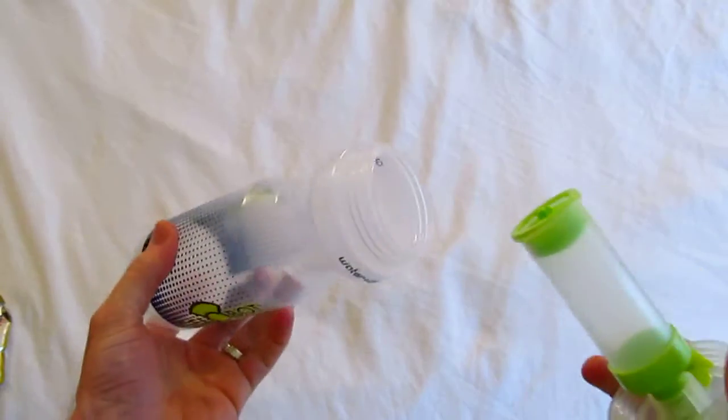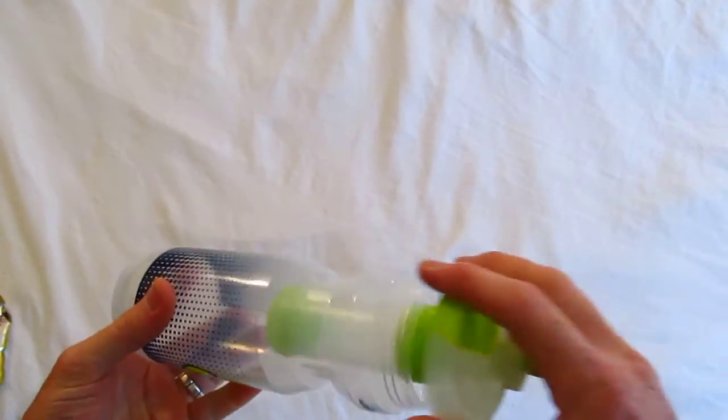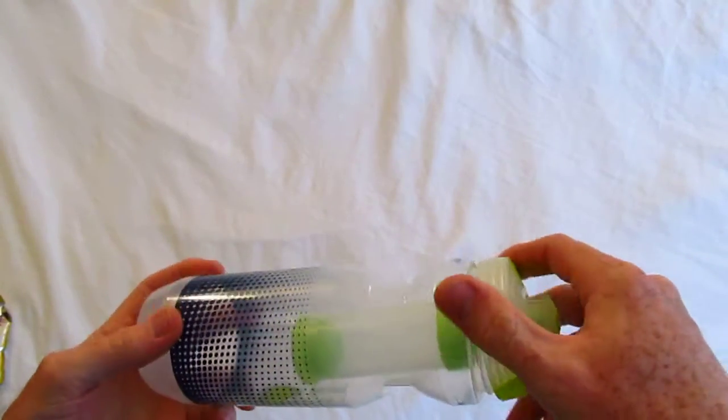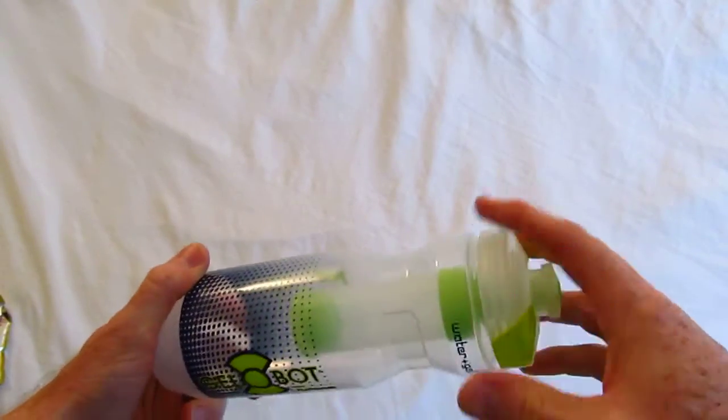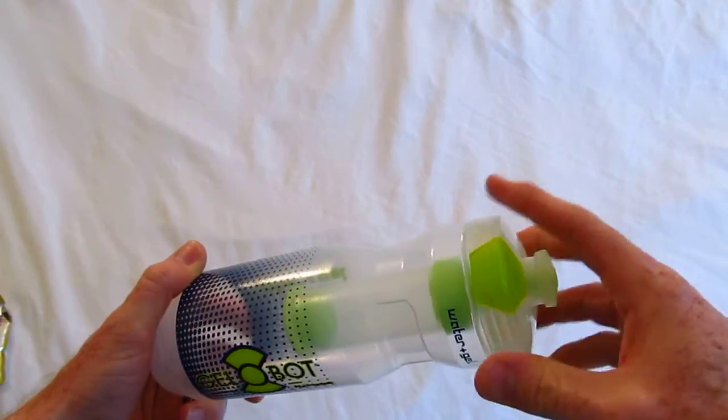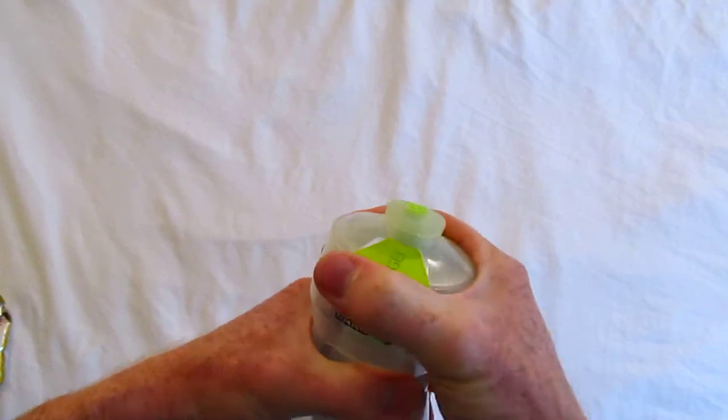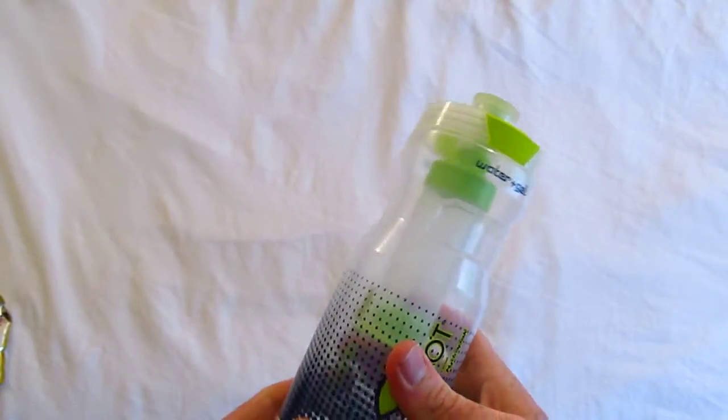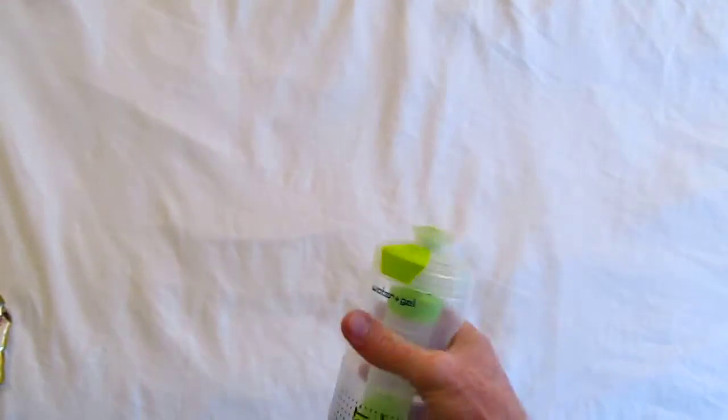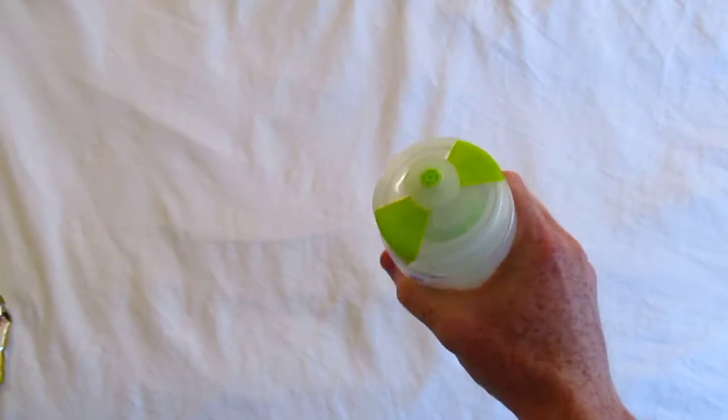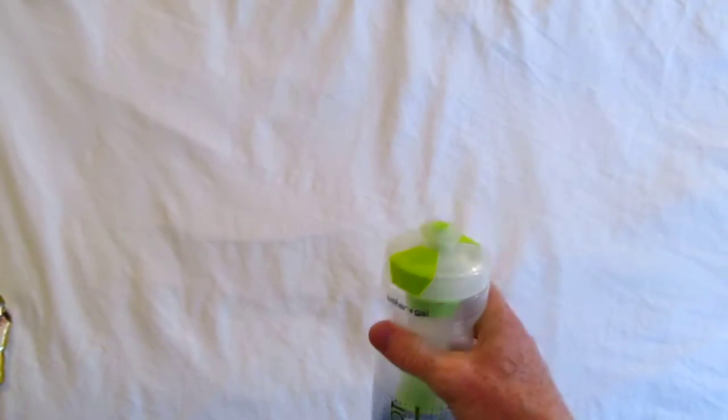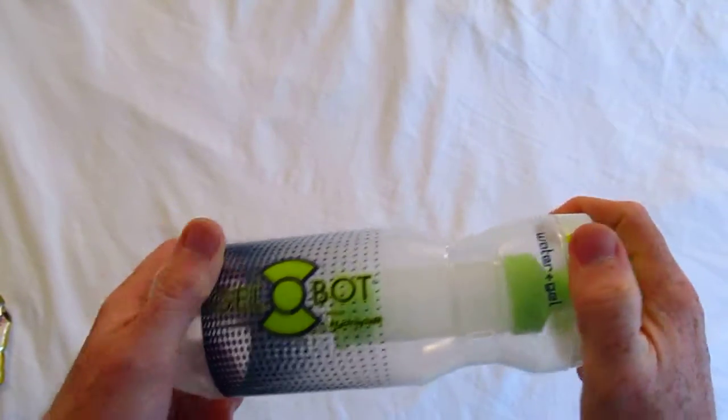This also works great for cross training. If you're not running, but say you're on your bike, there's nothing worse than trying to deal with sucking down a gel while drinking from a water bottle all while riding a bicycle. And this puts it that much easier. You can just grab it and get gels and water all in one and back in your bike.